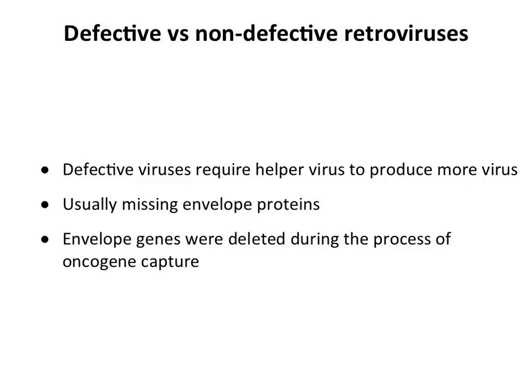A defective virus is missing sequence — put its genome in a cell and it can't replicate or make particles. It needs a helper virus co-infection to provide the missing sequences. Rous is not defective, but all those other bird-transforming viruses are, and you need avian leukosis as a helper to grow them. Typically the envelope proteins are deleted — if you don't have a glycoprotein in the particle, you can't replicate. You lose these viral genes during the process of capturing an oncogene from the cell.